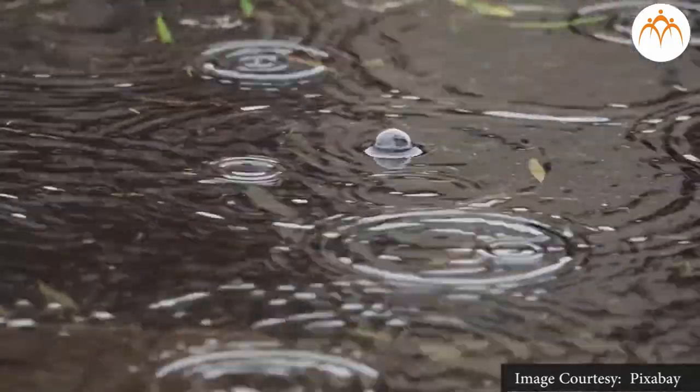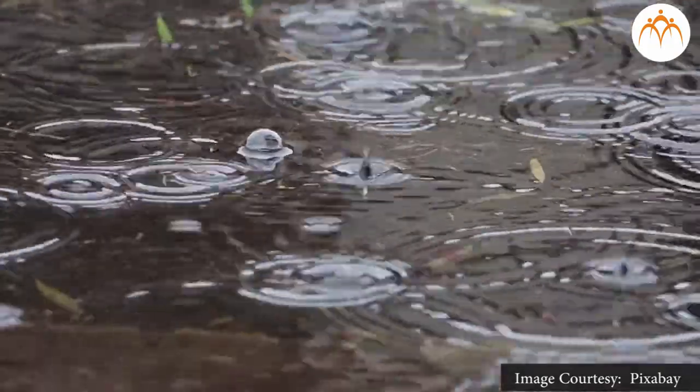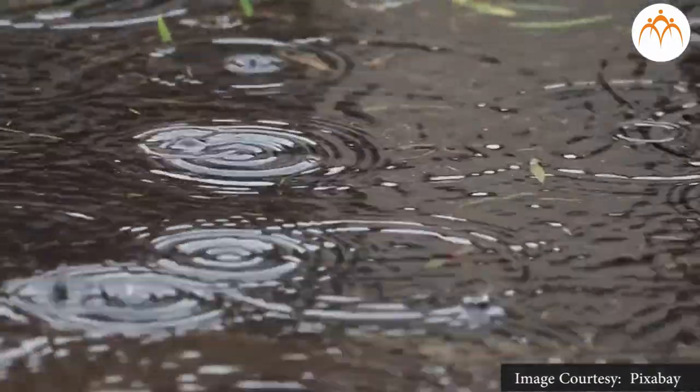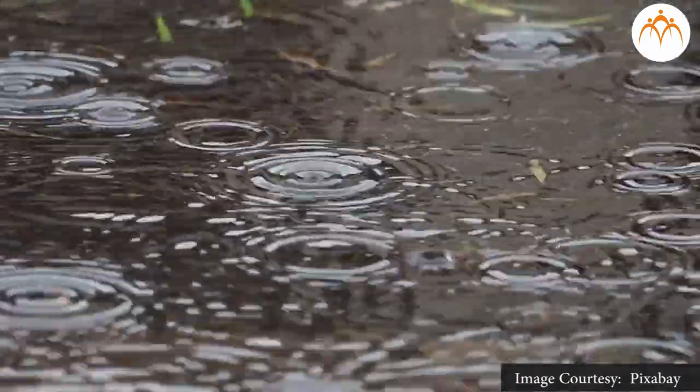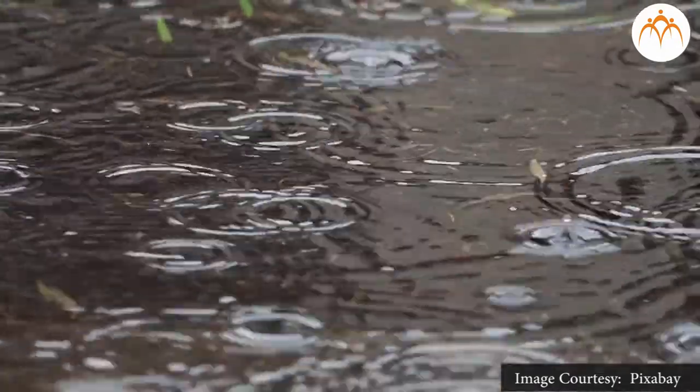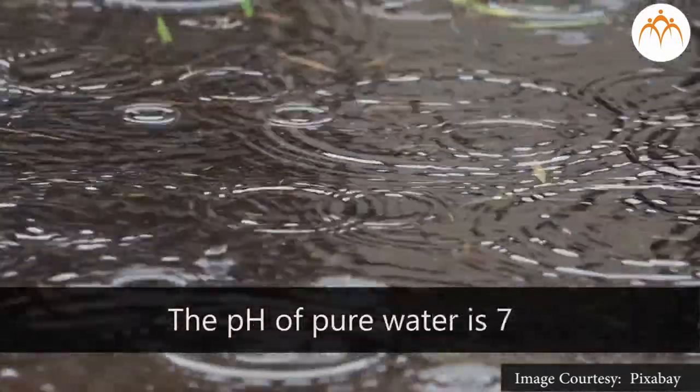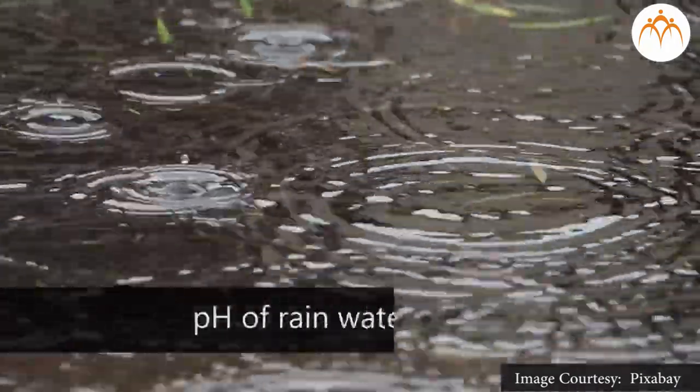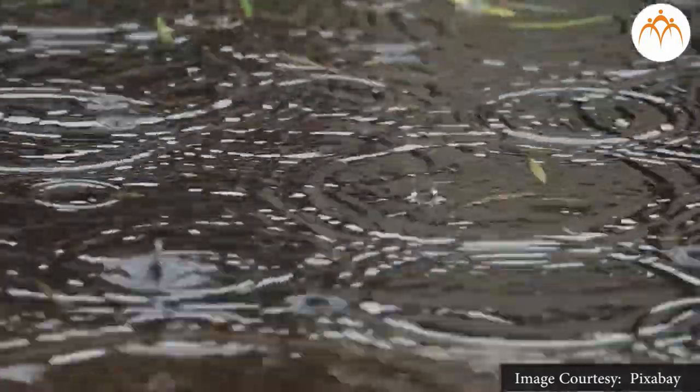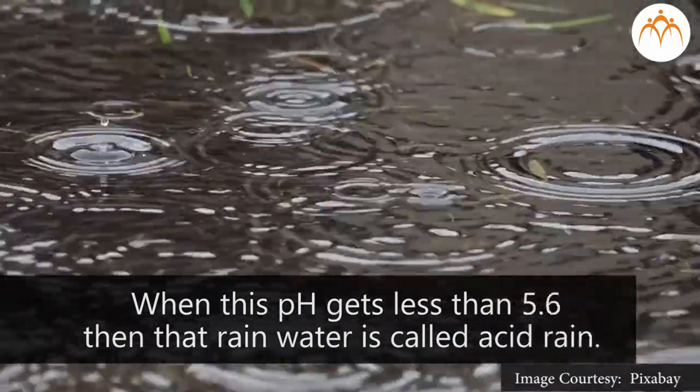Rainwater is pure. In this water, CO2, ammonia, and iron are present in small amounts. The pH of pure water is 7, but the pH of rainwater is 5.6. When this pH gets less than 5.6, then that rainwater is called acid rain.